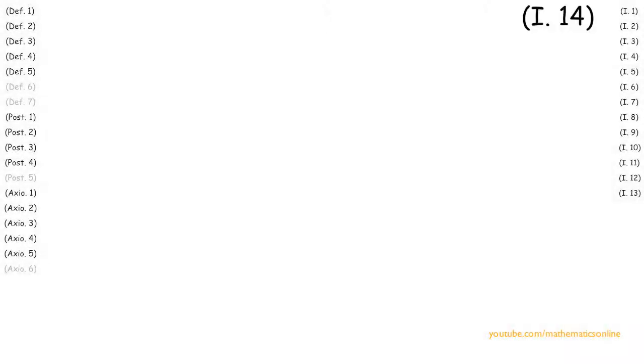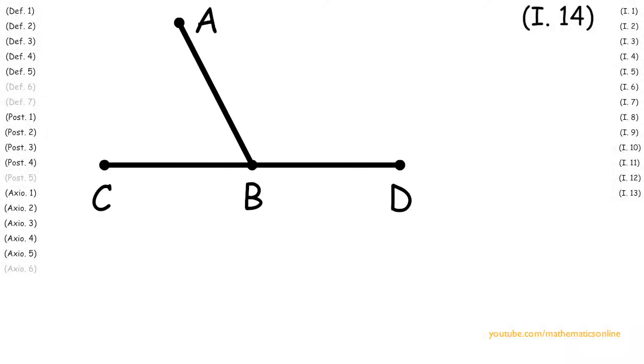To begin this proposition, we are given line AB, with the lines BD and BC drawn outward creating two adjacent angles. We are also given that angle ABC plus angle ABD are congruent to the sum of two right angles.